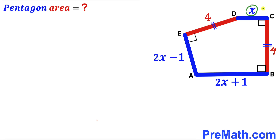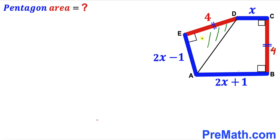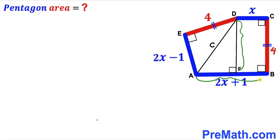Next, we are going to calculate the value of x by connecting vertices A and D. As a result, we get right triangle AED, and I'll label its hypotenuse as lowercase c. Then I drop perpendicular DF onto base AB, giving us another right triangle AFD.